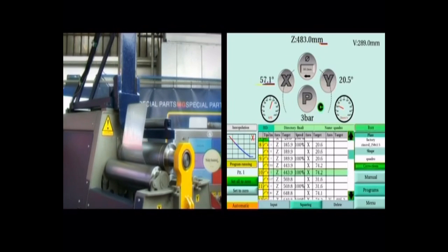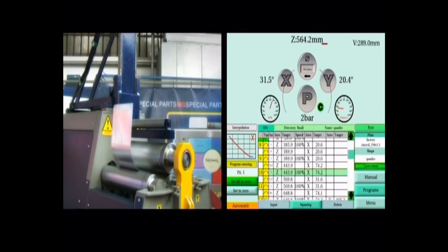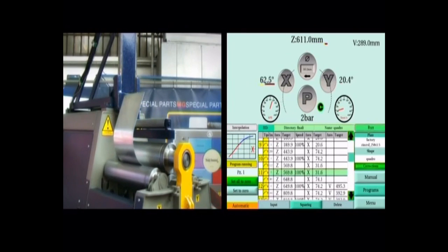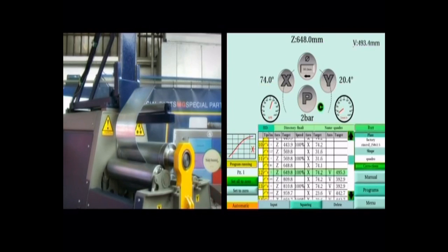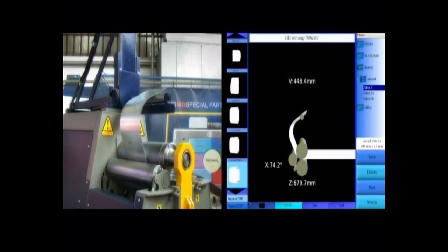During the execution, the program line currently selected, the calculated and actual interpolation trajectories are displayed on the screen, so that it's possible to constantly check the accuracy of the movements.